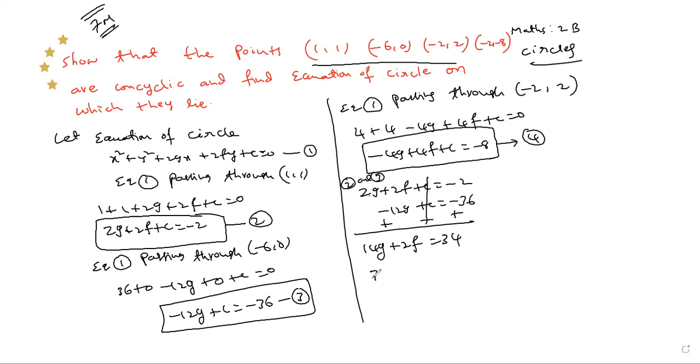Taking 2 as common factor, we get 7g + f = 17, equation number 5.